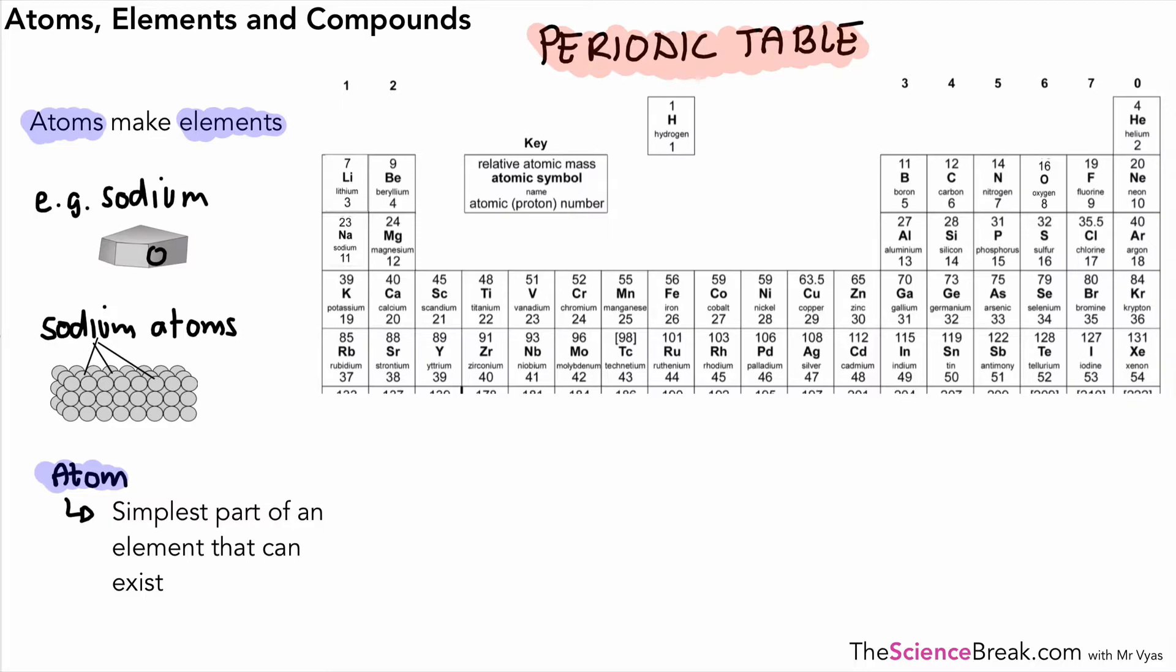We don't need to memorize it but we need to know how to read it. Let's have a look at a couple of elements. I've got that sodium we've been looking at. It's got the symbol, the name and a couple of numbers. Let's have a look at oxygen, symbol O, and some numbers that go along with it.